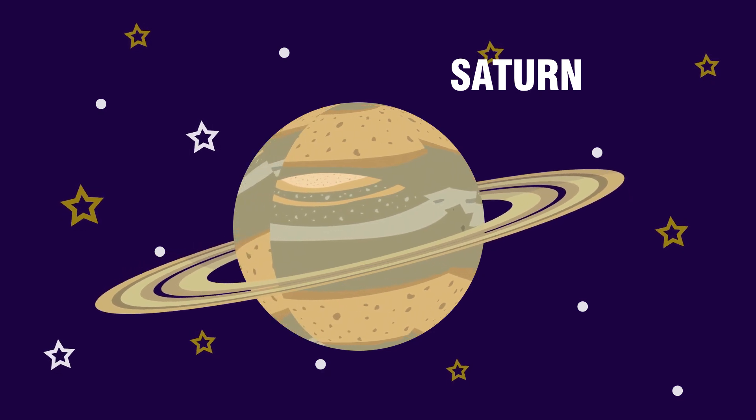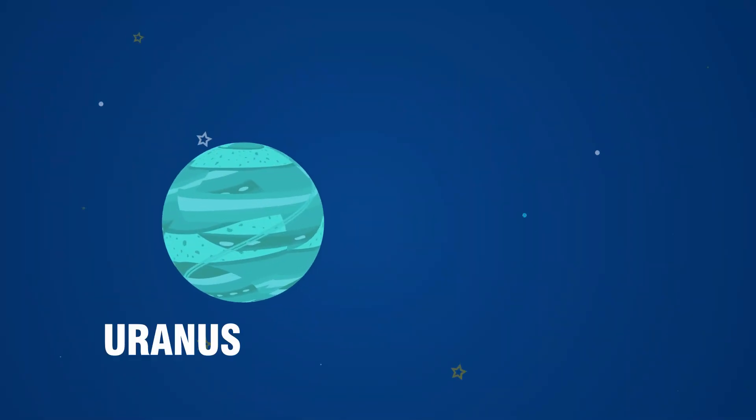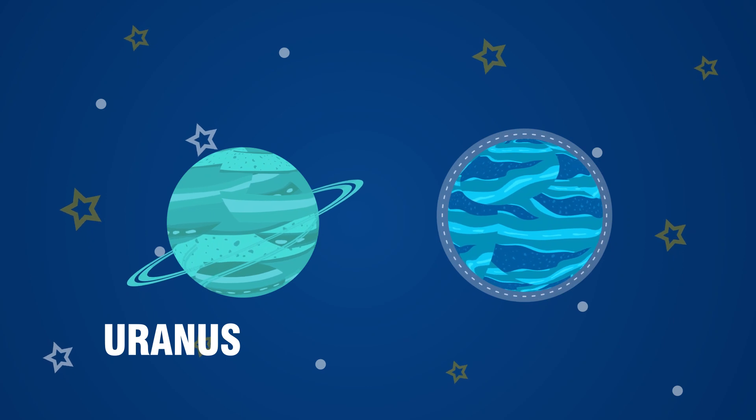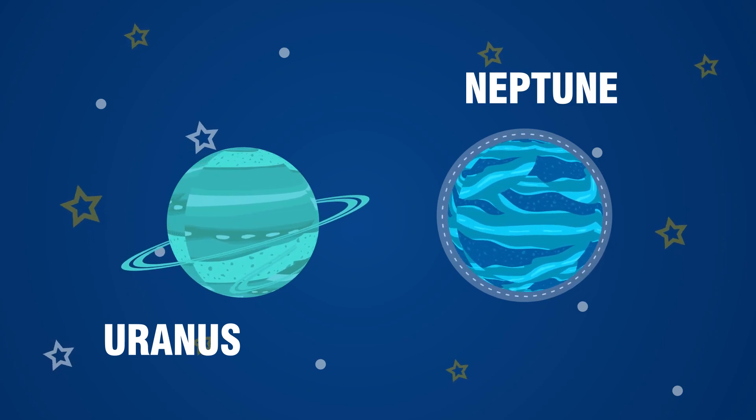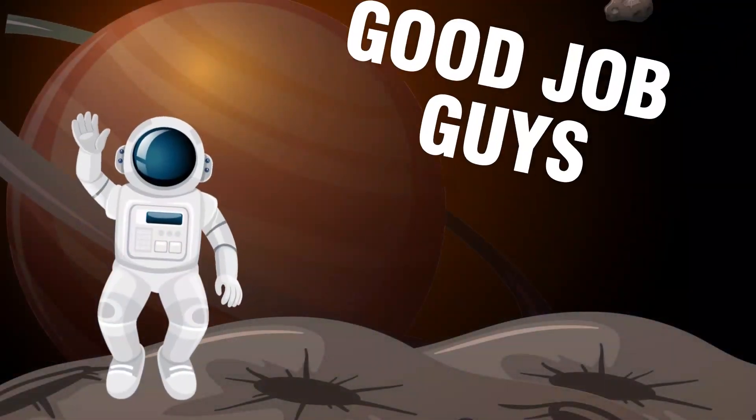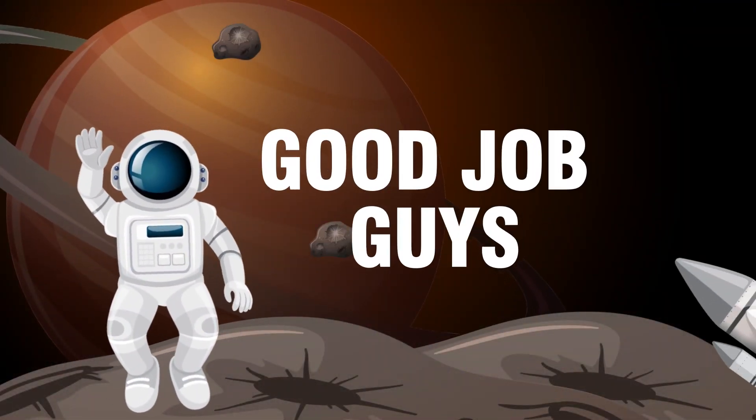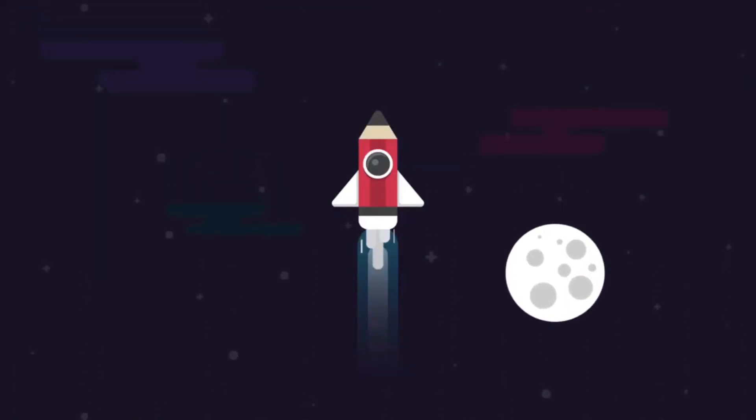Then comes Uranus and Neptune. They both are the furthest planets in our solar system and colder than we have ever imagined. Good job guys, these are the eight major planets, but there are millions of them in our solar system but they are small in size.